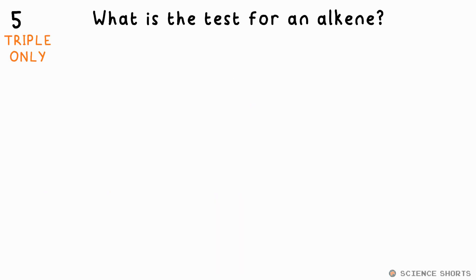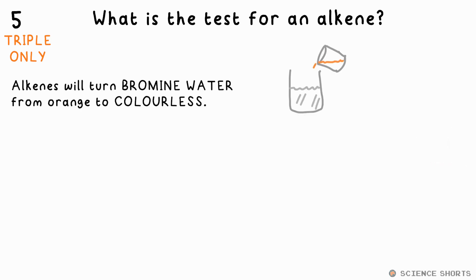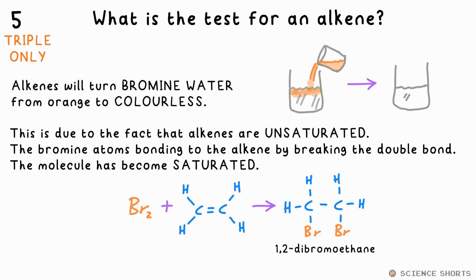What's the test for alkenes? Alkenes will turn bromine water from orange to colourless — remember we don't say clear. This is because the bromine atoms bond to the alkene to make a bromoalkane, which is colourless.